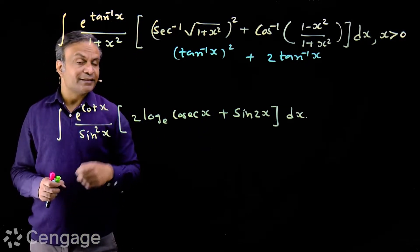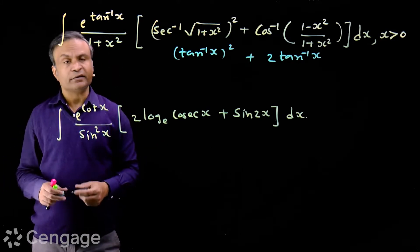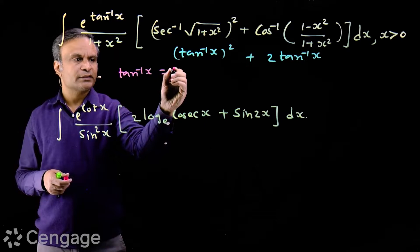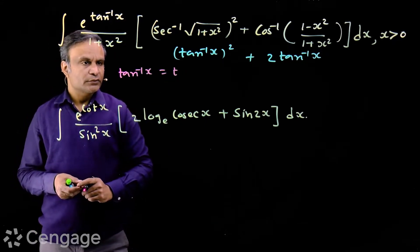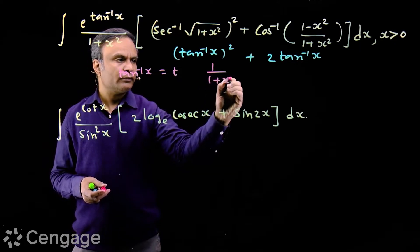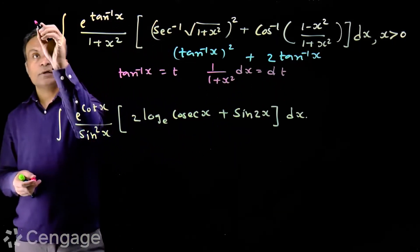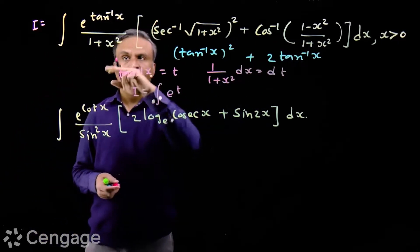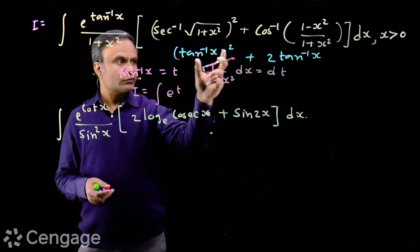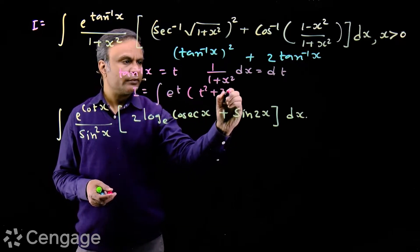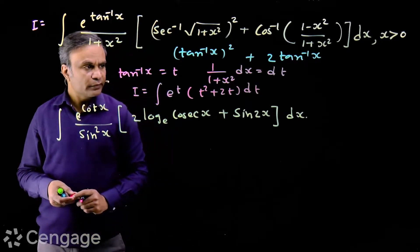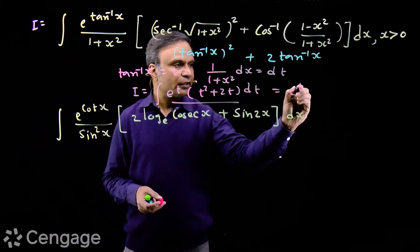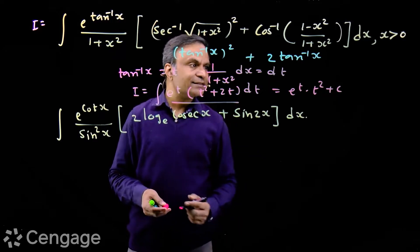Now we have e^(tan⁻¹x) and inside the bracket two terms containing tan⁻¹x. So we substitute tan⁻¹x = t, giving 1/(1+x²) dx = dt. The integral becomes ∫e^t dt, with (tan⁻¹x)² → t² and 2tan⁻¹x → 2t. So inside the bracket we have t² + 2t. Since 2t is the derivative of t², the integral evaluates to e^t · t², where t = tan⁻¹x.